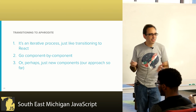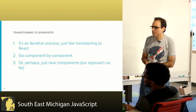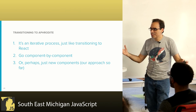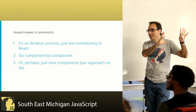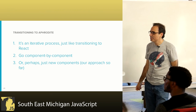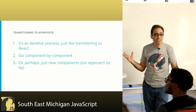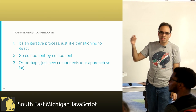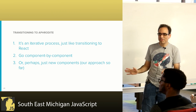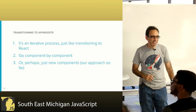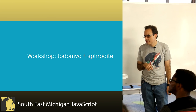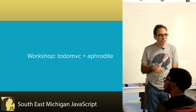I'll say a few things about transitioning to Aphrodite. It's an iterative process, just like transitioning to React — a lot of people with an existing code base will take one little part of their UI and move it over. Same sort of thing here: go component by component, or just use it for new components. We have a lot of code at Khan Academy, and so far our approach has pretty much been: when we create a new component, we use Aphrodite. We haven't done a lot of retroactively Aphrodite-fying things unless we have a real need.